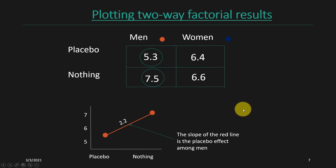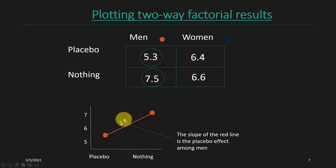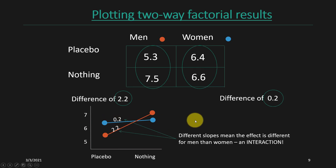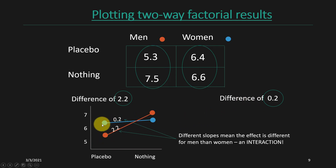We can see this more clearly by plotting these two-way factorial results. Taking the same table and plotting it as a figure: for men, we plot the mean for the placebo group and the mean for the nothing group, and the difference is represented as the slope of this line, which is 2.2. For women, we plot their data points — 6.4 and 6.6 — so the slope of that line is 0.2. Therefore, if we see a difference in these slopes, that is an interaction. The slopes being different means the effect of taking the placebo is different depending on whether you're a man or a woman. Here we see evidence of an interaction because the slope in the group of men is much steeper than the slope in the group of women.